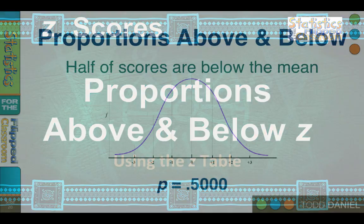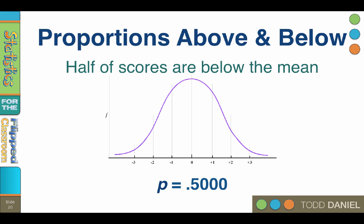The first thing you need to know is that because half of the scores are below the mean and half of the scores are above the mean, the probability of a score being below or above the mean is p equals 0.500 or 0.5.